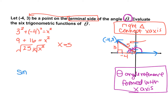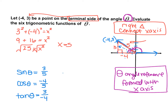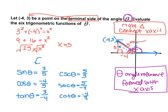Sine of theta is opposite over hypotenuse. The opposite side is 3, and the hypotenuse is 5, so sine of theta equals 3 over 5. Cosine of theta is adjacent over hypotenuse — adjacent is negative 4, so cosine equals negative 4 over 5. Tangent is opposite over adjacent, which is 3 over negative 4. Sine pairs with cosecant as reciprocals, secant is cosine flipped over, and cotangent is tangent flipped over, because all of these are reciprocals of the three primary functions.